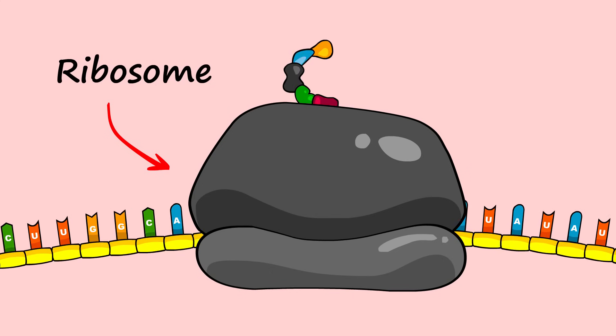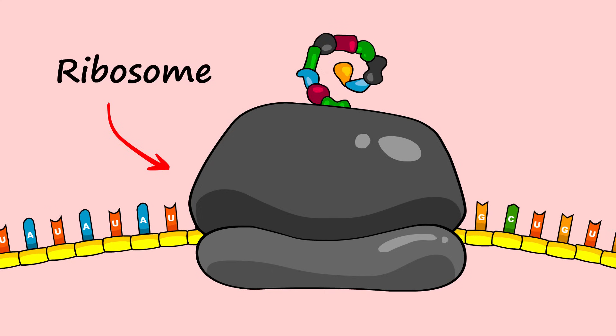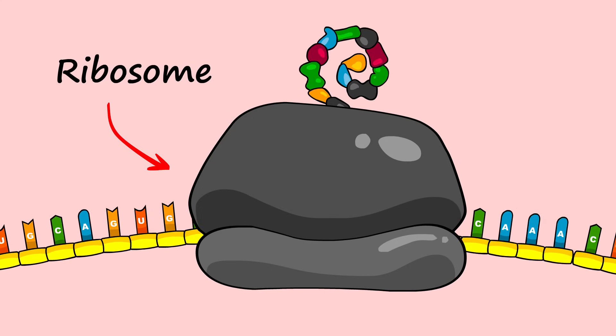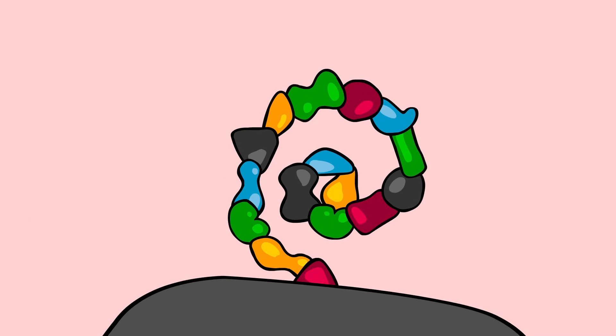the protein building machines we learned about in earlier animations. In these cases the RNA copy of the DNA gene functions as a set of instructions telling the ribosome how to build a specific type of protein.